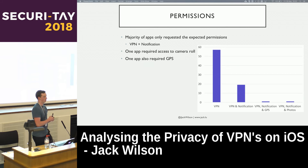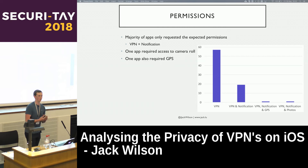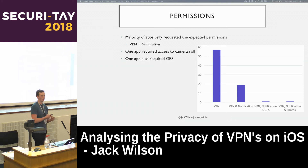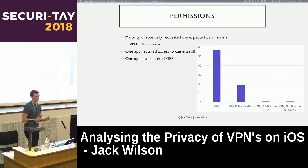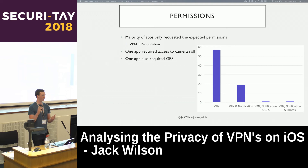For permissions, the majority of apps were just requesting normal permissions — VPN and notification. One app required camera roll access, which was a bit questionable, but it turned out the app combined a storage cleaner that found duplicate photos with the VPN, so that explains it somewhat. One app was requiring GPS coordinates, justifying it by saying it finds the closest and fastest server by location — but you'd do that based on latency, not location, so a bit of a strange one.